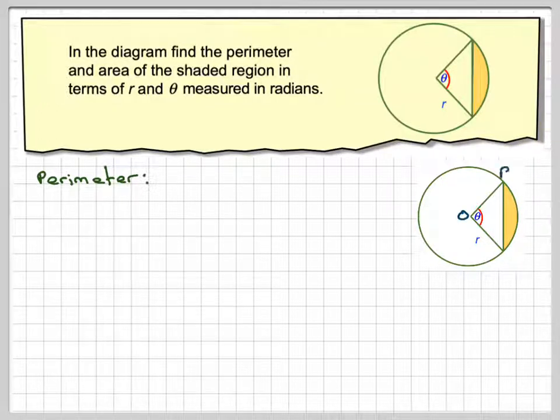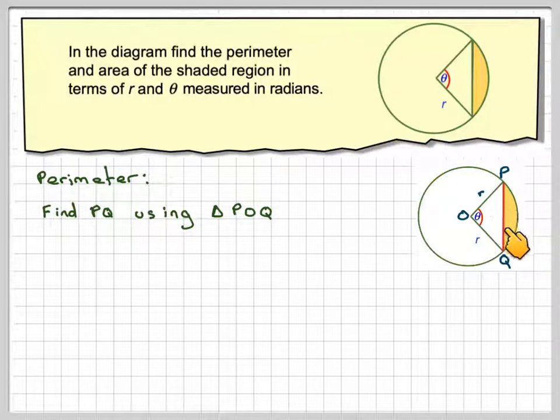So we're putting labels in O, P, Q, and then first of all we'll find this distance here. This distance here is also R because it's the radius of the circle. So finding PQ using triangle POQ, we're going to use this triangle here, we're going to find this side here.